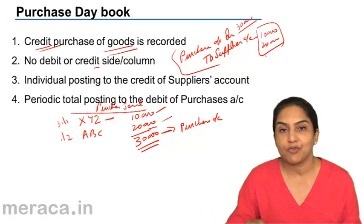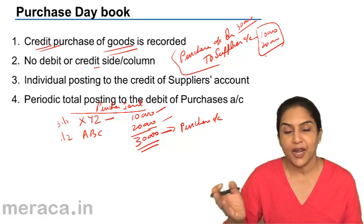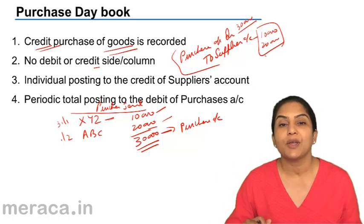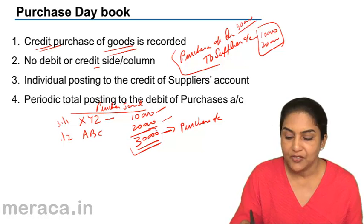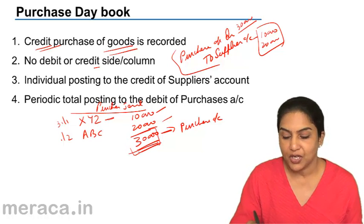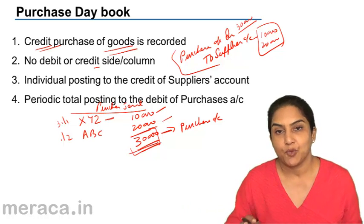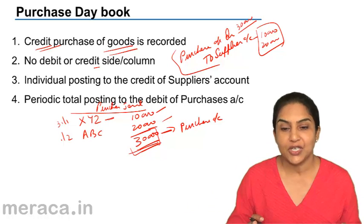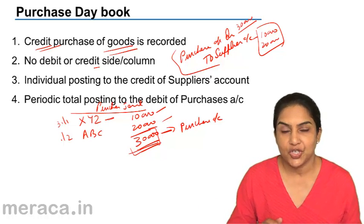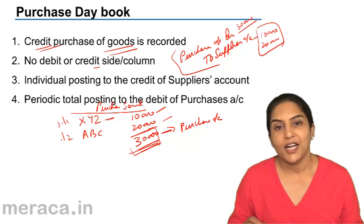To some extent, therefore, it saves the trouble of posting each and every entry to the purchase account. The monthly, weekly, or quarterly totals only are directly posted to the purchase account. If we want to know the details, we come to the purchase day book and look at that.